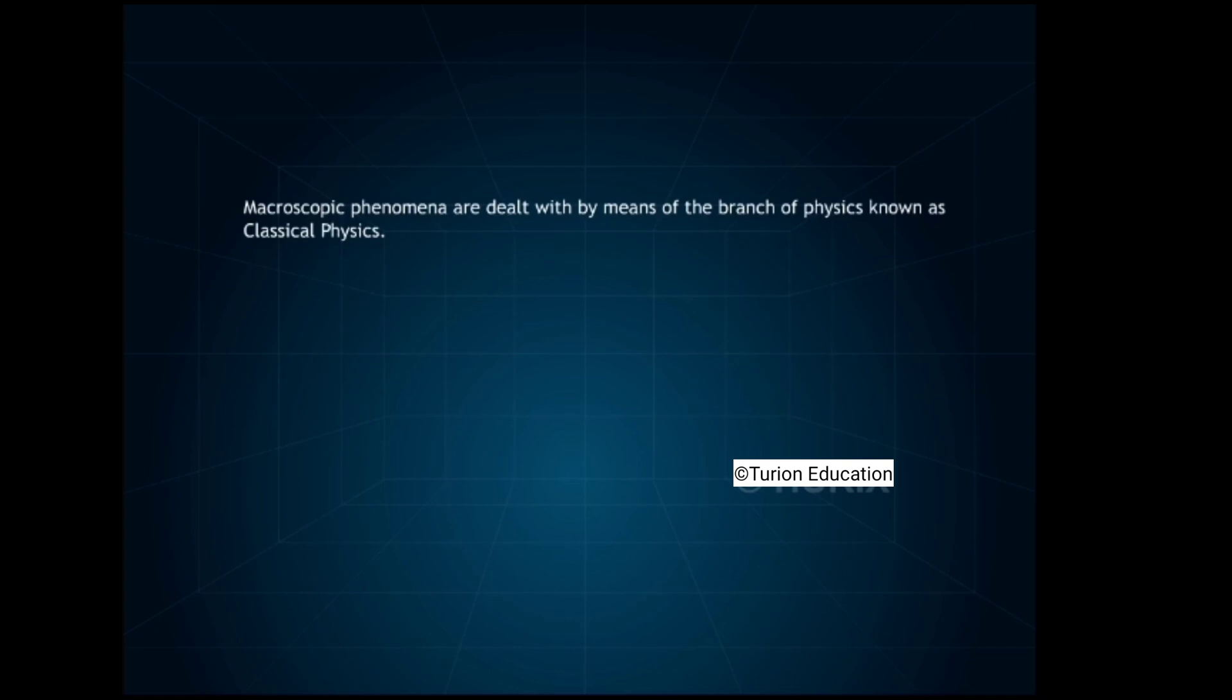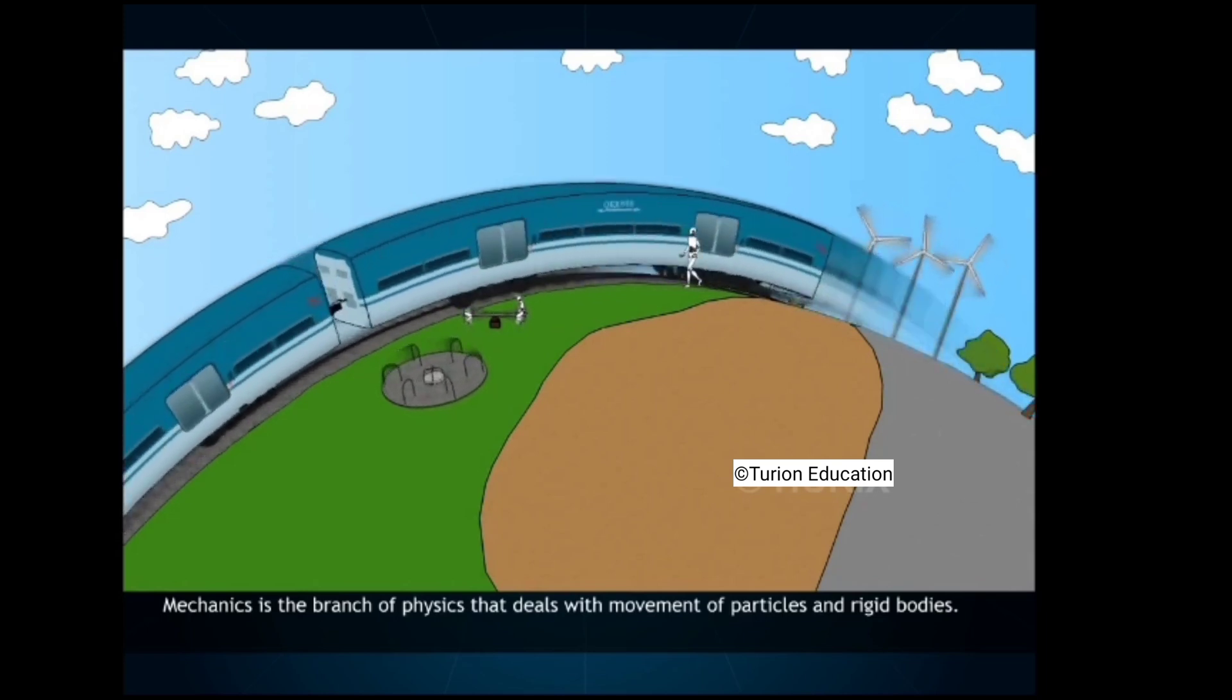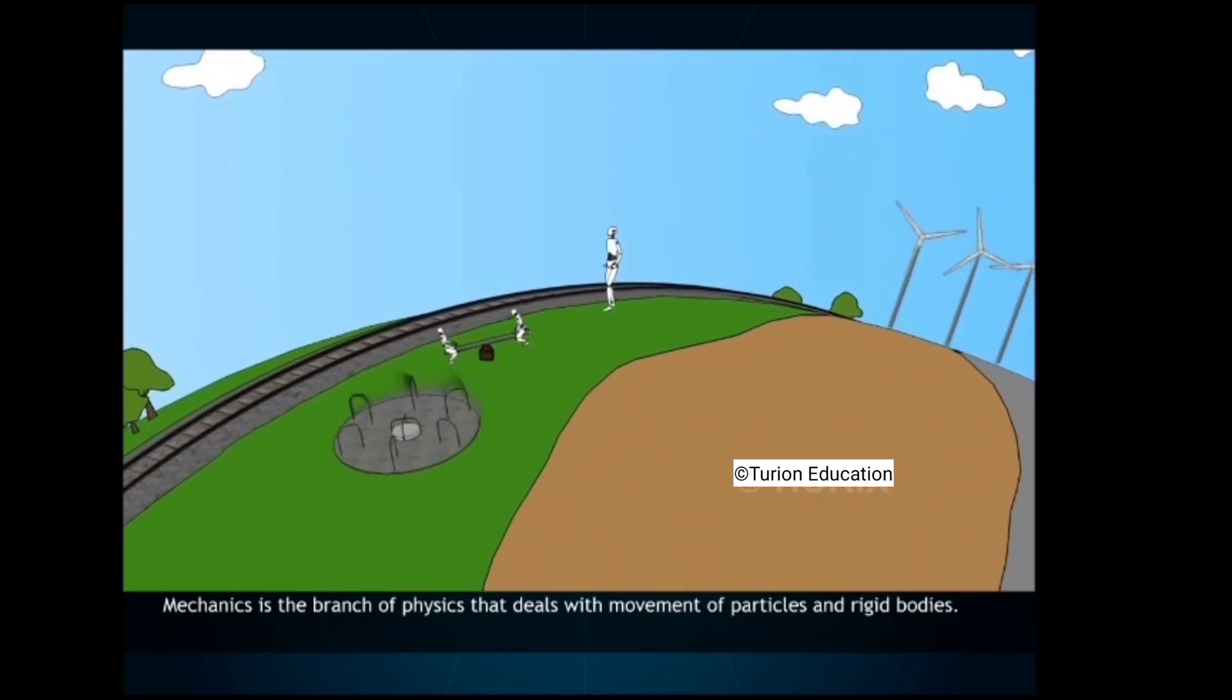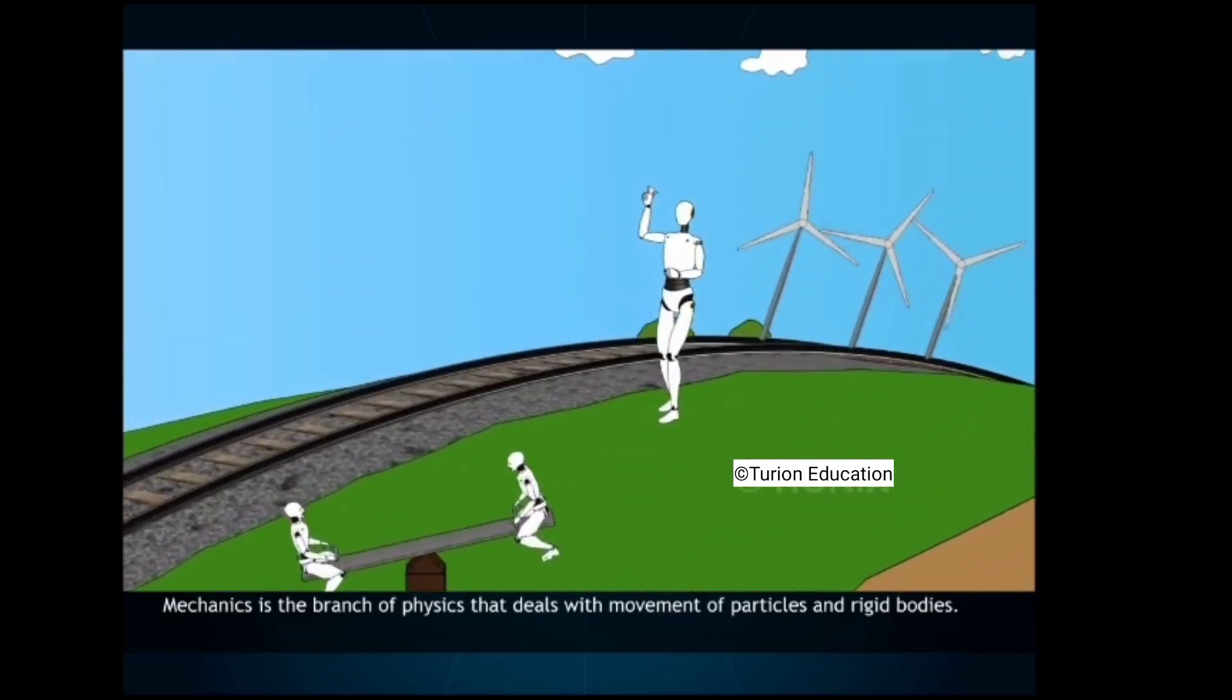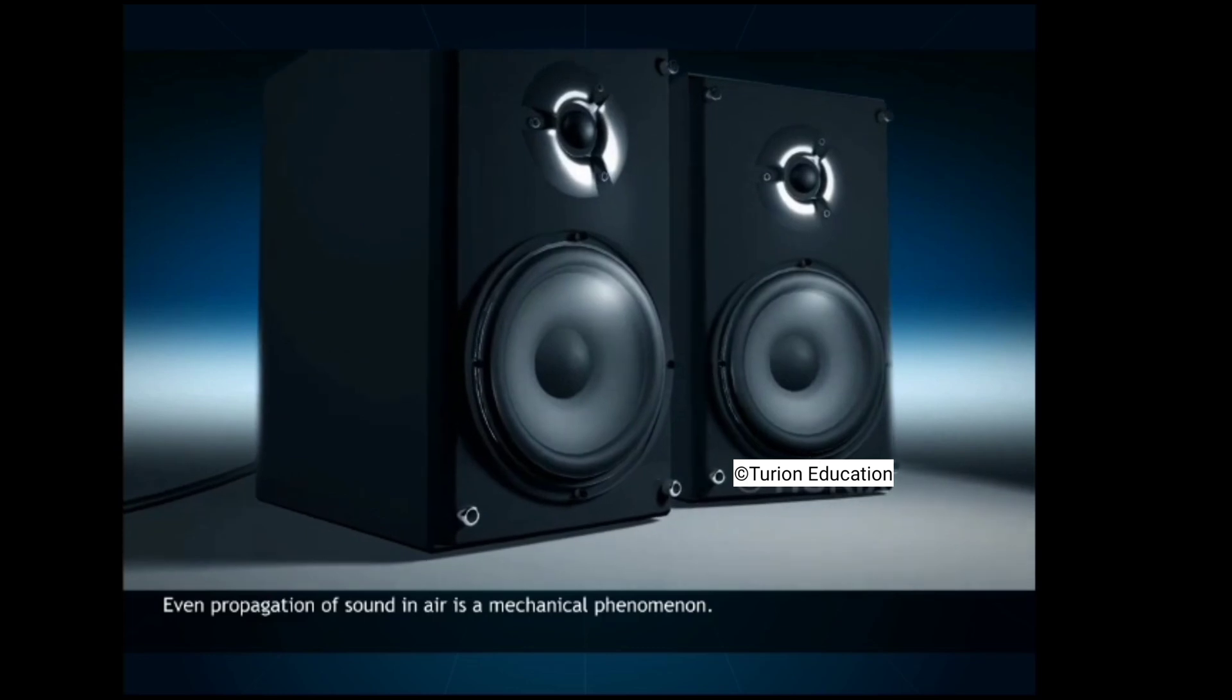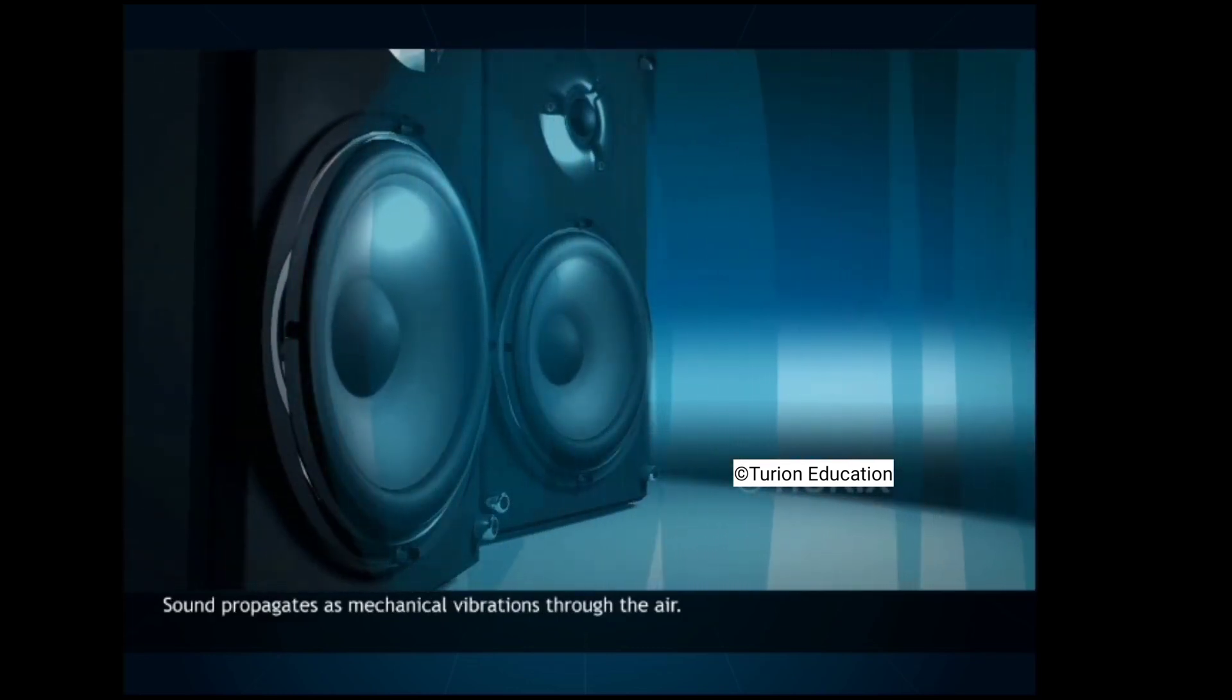Macroscopic phenomena are dealt with by means of the branch of physics known as classical physics. Classical physics itself is a collection of smaller disciplines, mechanics, electrodynamics, optics and thermodynamics. Mechanics is the branch of physics that deals with movement of particles and rigid bodies. Even propagation of sound in air is a mechanical phenomenon. Sound propagates as mechanical vibrations through the air.